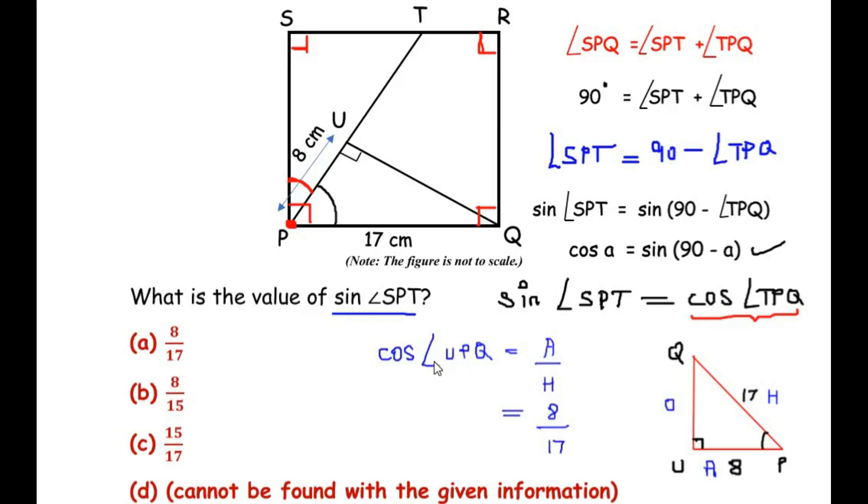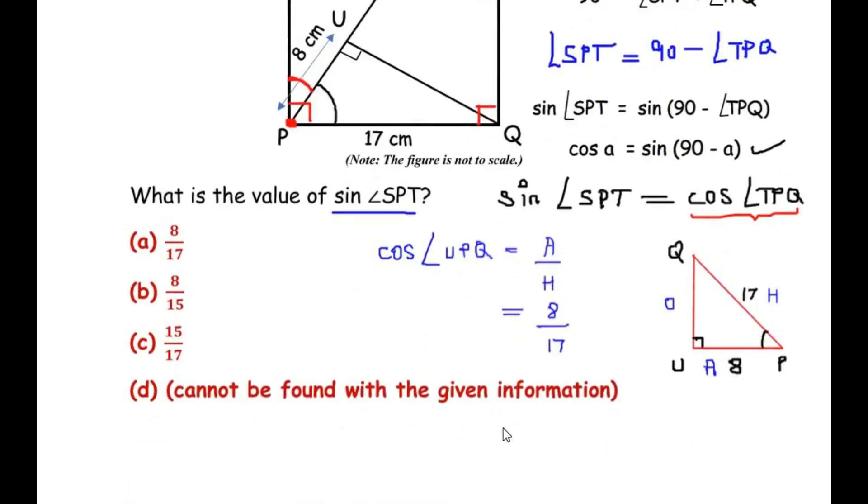So this is our cosine of angle UPQ. Now UPQ as we know is same as angle TPQ, so this will be equivalent to writing cos of angle TPQ. And here we have seen that cos of angle TPQ is same as sine of angle SPT by using the complementary angles. So here our answer for sin SPT is equivalent to 8 over 17, which is our option A.